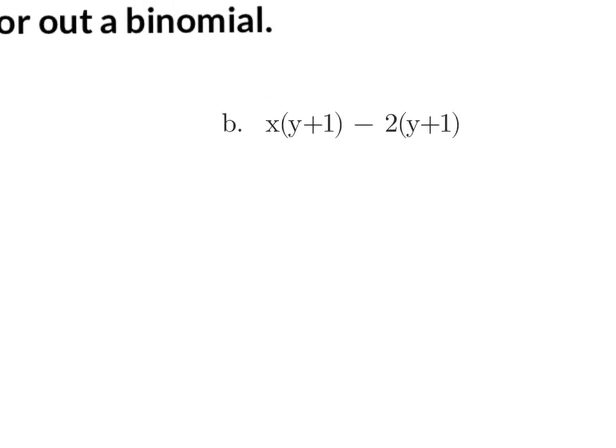Let's look at example B — same idea. I want to treat this as one term and this as another term. What do they have in common? They have a y plus 1 in common. So I am going to factor out my y plus 1 — that is my greatest common factor — and write it on the outside of a set of parentheses. Inside, I want to write each term after we divide by the y plus 1. So the first term, x times y plus 1: if I get rid of y plus 1, I am just left with x. The second term, minus 2 times y plus 1: if we get rid of the y plus 1, we are left with minus 2. And you are done.